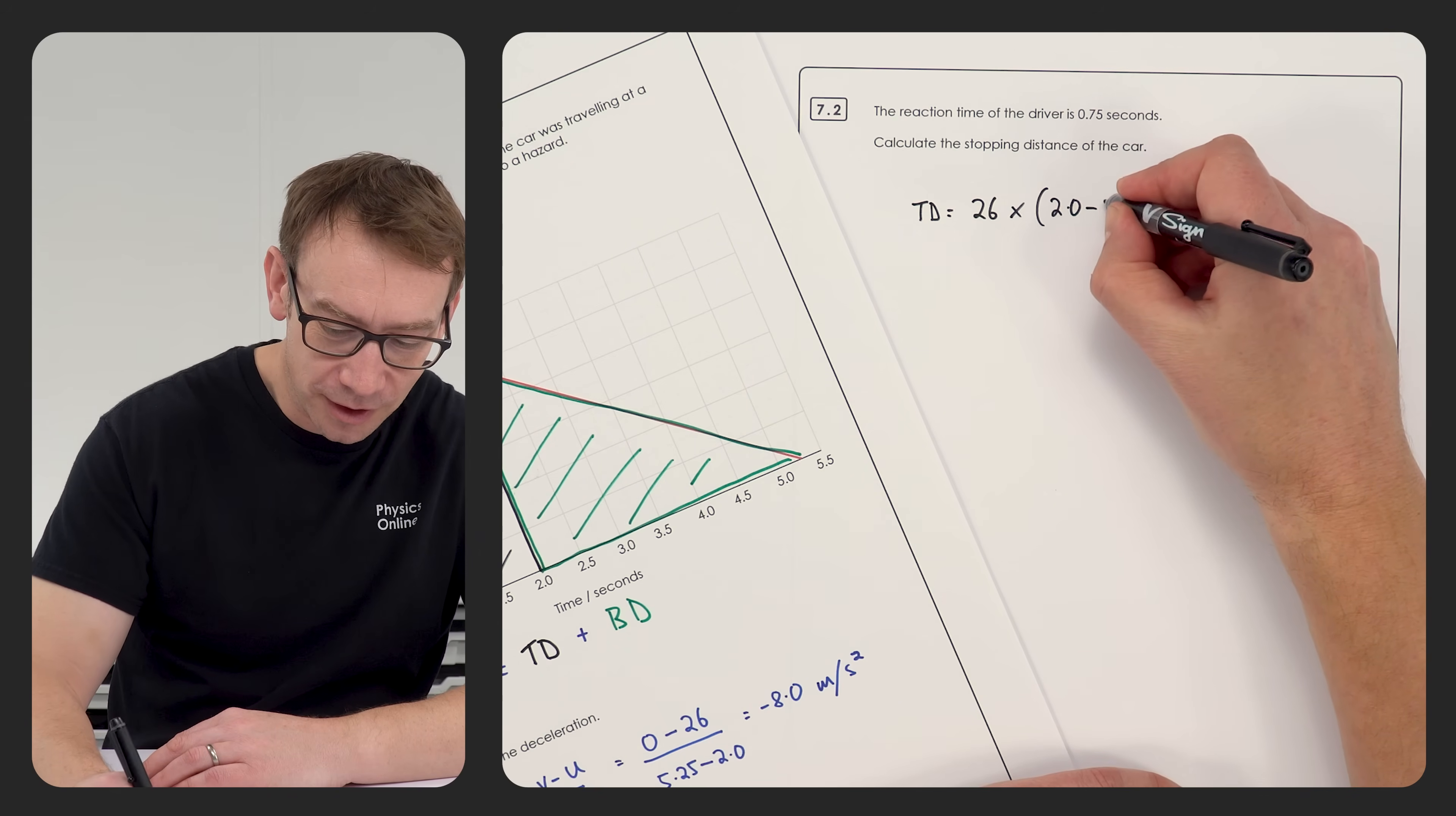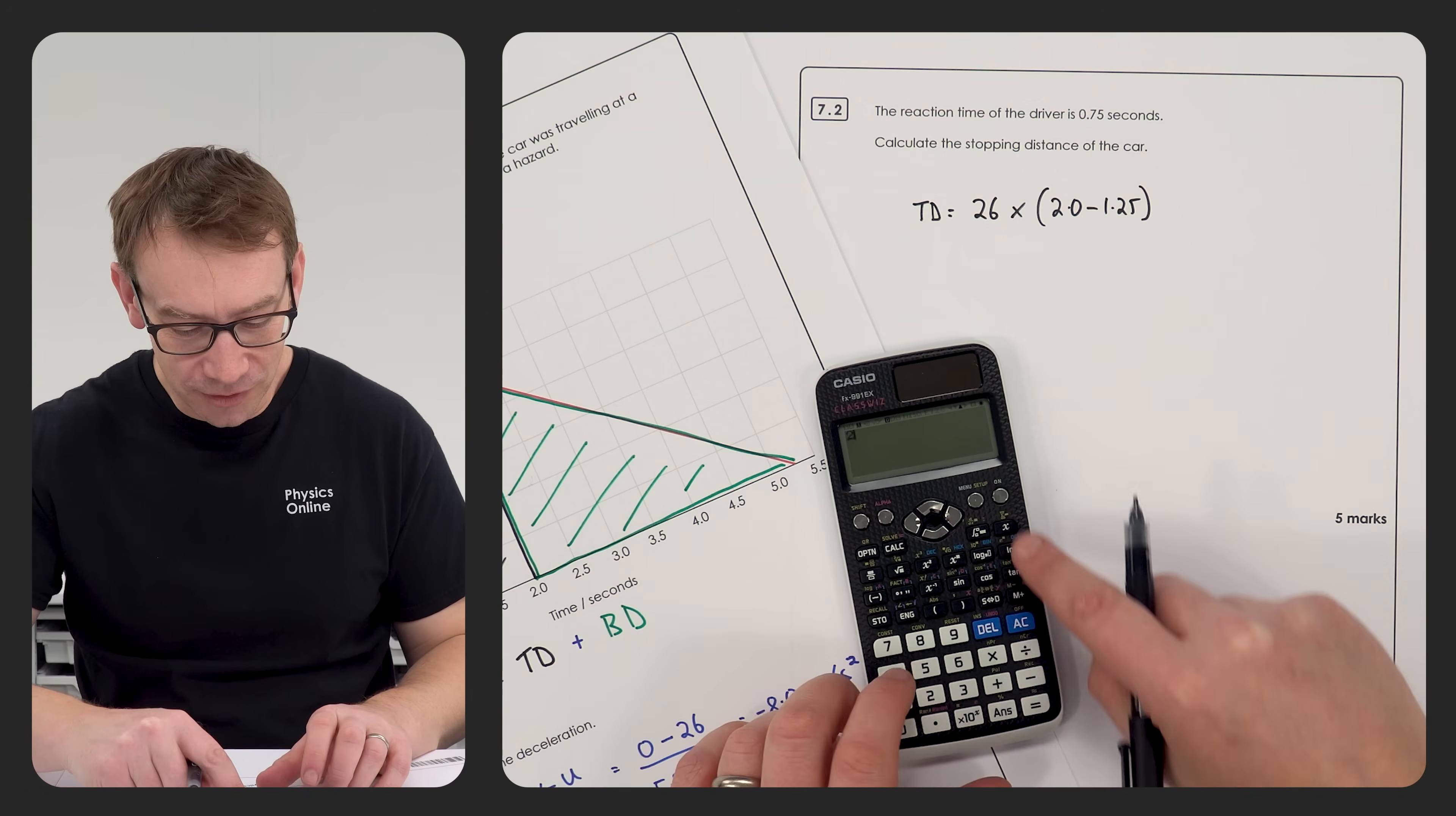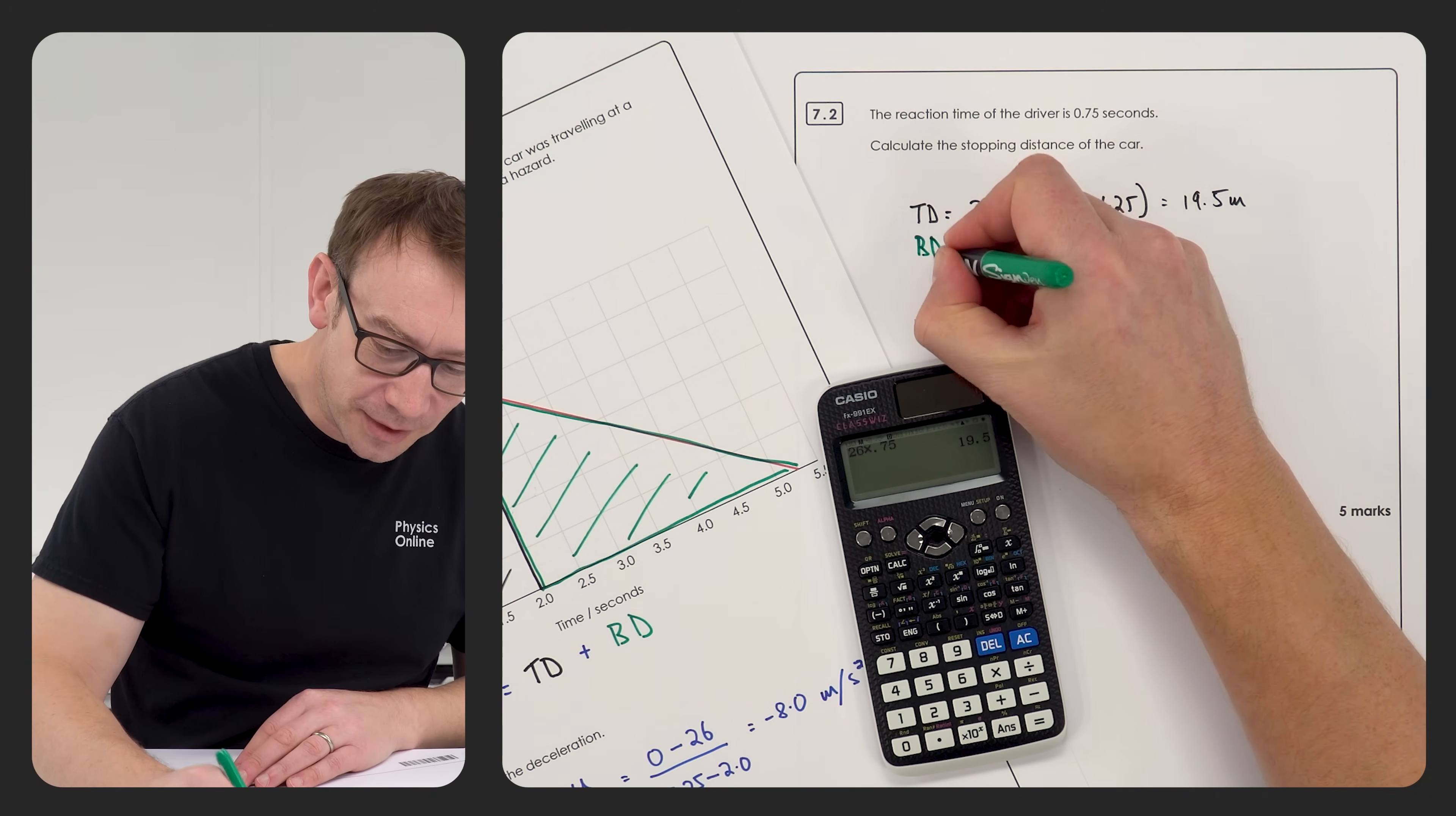Again you can do stuff in your head, you can work out three quarters of 26, but I'm just going to do 26 times 0.75, which is equal to 19.5 meters. Pretty straightforward so far. You can then do the same thing for the braking distance, but now we've got the area of a triangle.